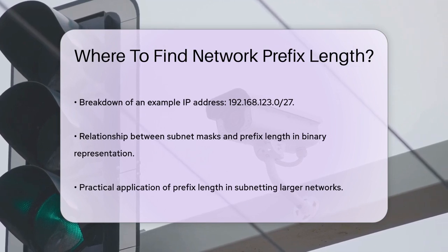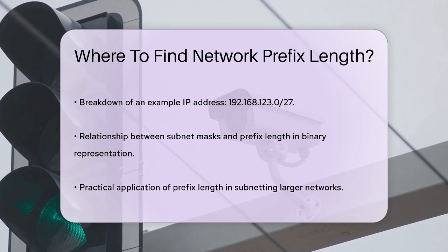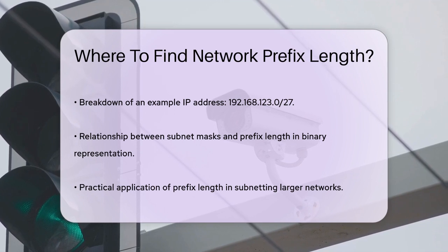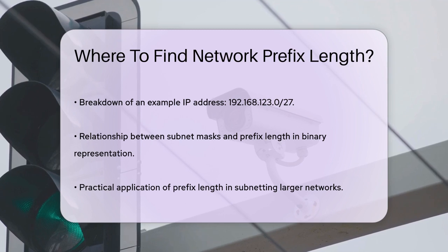In practical terms, when you see an IP address with a prefix length like 10.200.20.0/27, you can break it down further. The /27 means you have 27 bits for the network and the remaining bits for the host portion. This helps in subnetting, where you divide a larger network into smaller subnets.